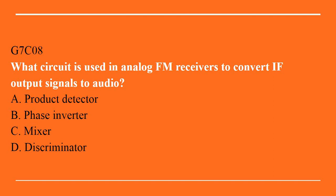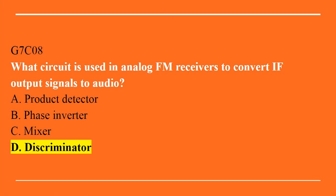G7C08: What circuit is used in analog FM receivers to convert IF output signals to audio? A. Product detector. B. Phase inverter. C. Mixer. D. Discriminator. Correct answer is D. Discriminator.